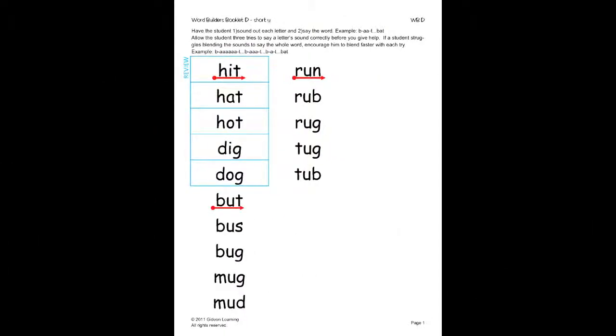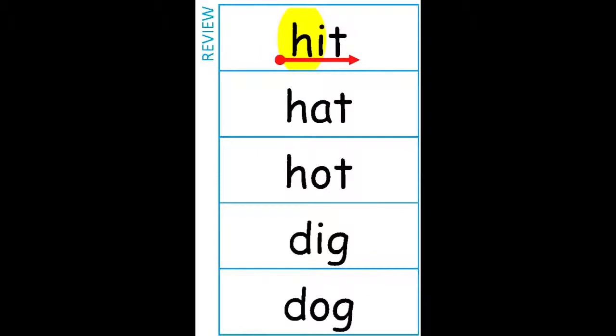On the word list, have the student sound out each letter and say the word. Always do the words located in the review box first. You may guide the child to decode the word by tracing your finger along the arrow. The child should read the word like this: hit, hit. Encourage the student to read the word faster each time.